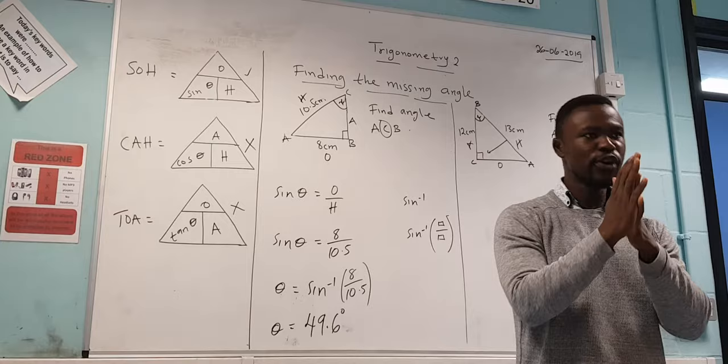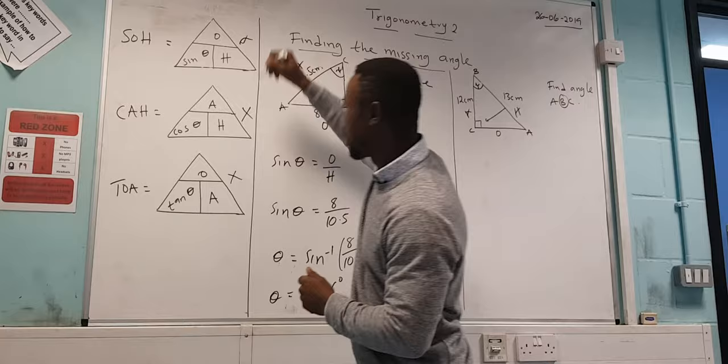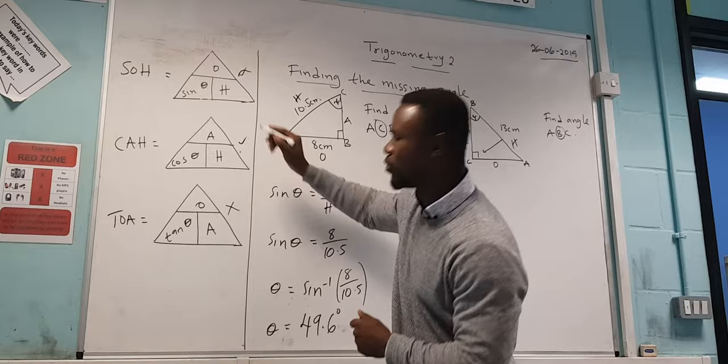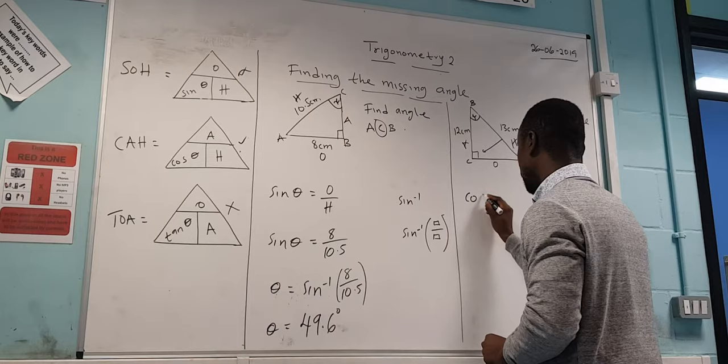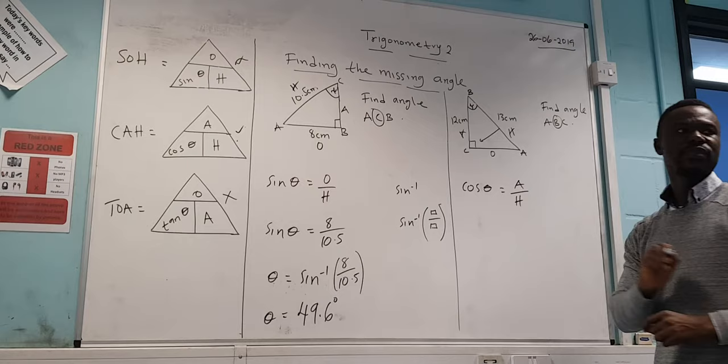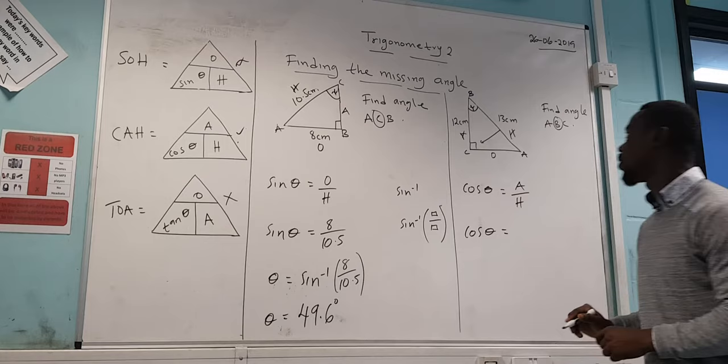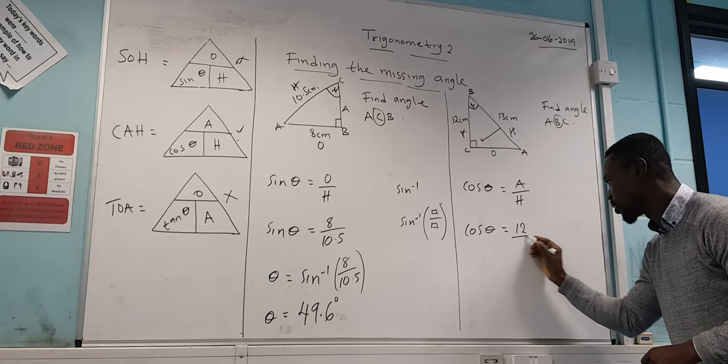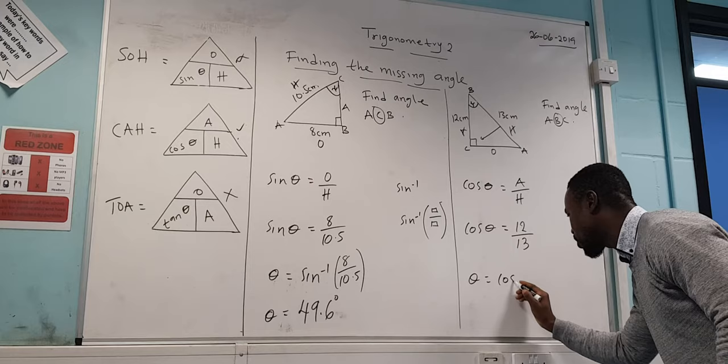Any formula that has O in it, we are not going to use that. So here it has O in it. So can we use that? No. Here it has O in it. Can we use that? No. So this is the one that we are going to use. So straight away write it down. Cos theta. So cos of the angle equals your adjacent over your hypotenuse. So let's put it down. Cos theta equals our adjacent is 12. Our hypotenuse is what? 13.